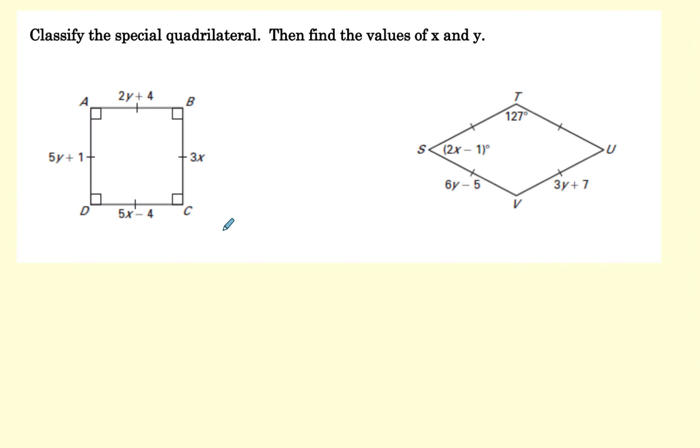Let's now look to see if we can classify the quad and then find the values of X and Y. Now I can see this is a rectangle because it has four right angles. And I can see it's a rhombus because all the sides are congruent. Now when it's both a rectangle and a rhombus, we call it a square. And let's go ahead and find X and Y.